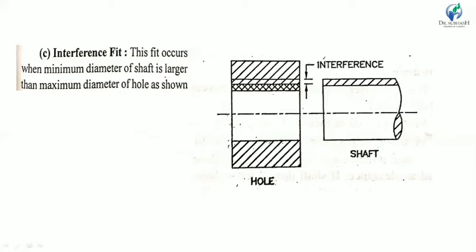When the maximum diameter of the shaft is larger than the maximum diameter of the hole, that is called interference fit.